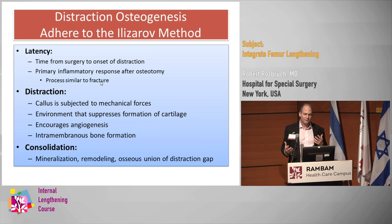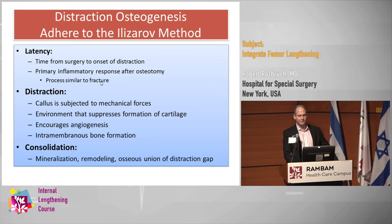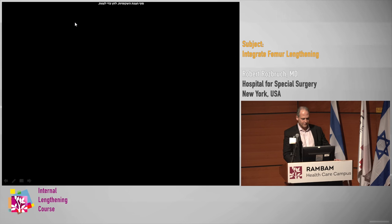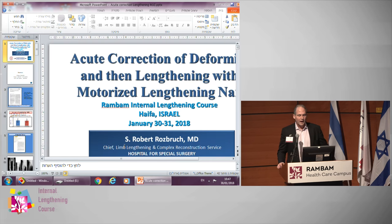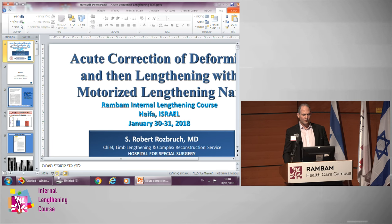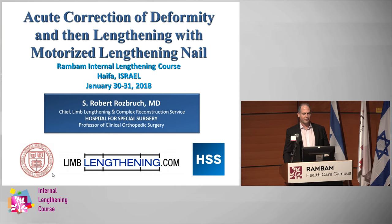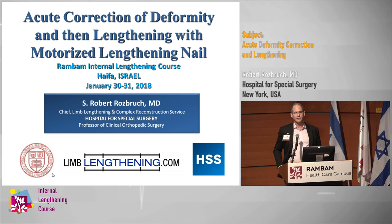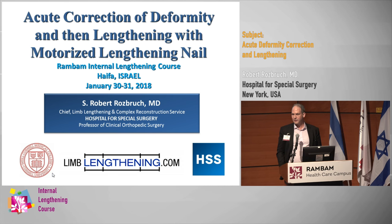I use the temporary external fixator in more complicated cases, specifically for acute deformity correction and then lengthening, as you're going to see in this talk. You can use it if you like. John routinely uses the X-fix for antegrade. The idea of doing the osteotomy, having your pins, putting a bar on just to hold it — is also an option. I tend not to use it for routine cases, but I do use it when doing deformity correction and then lengthening.